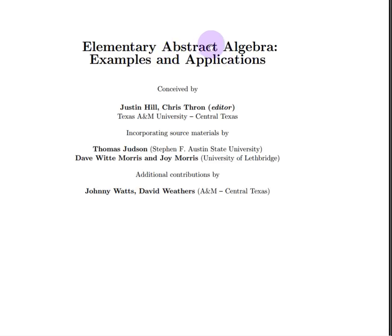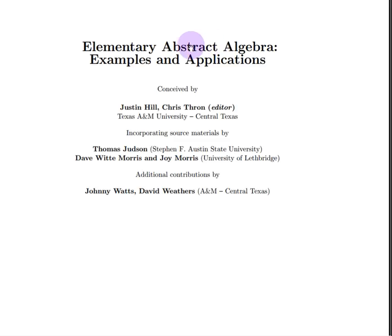The next word I want to focus on is 'abstract.' This is a different kind of algebra. The algebra you've seen before has to do with integers, real numbers, or rational numbers. We're going to do algebra with other quantities. You might have done algebra with matrices or complex numbers — these are also examples of algebra using different number systems. We're going to go very general and talk about general number systems. In particular, we're going to introduce the notion of groups, rings, and we may get to fields. These are general abstract structures that you do algebra in — in some ways generalizations of the number systems you know and are familiar with.